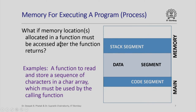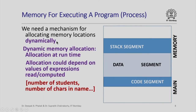Here is another example. A memory location that is allocated in a function may actually be required in the caller function after the called function returns. For example, I might want to call a function whose job it is to read and store a sequence of characters in a character array, and when this function returns to the calling function, the calling function must use this character array to do some other processing. If the called function has the character array as a local array within itself, then when it returns, the calling function does not have access to the character array in which the characters were stored. So in order to address problems like these, we really need a mechanism for allocating memory locations dynamically.